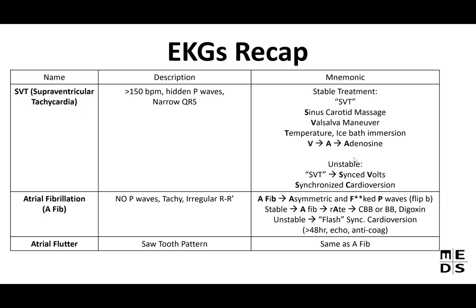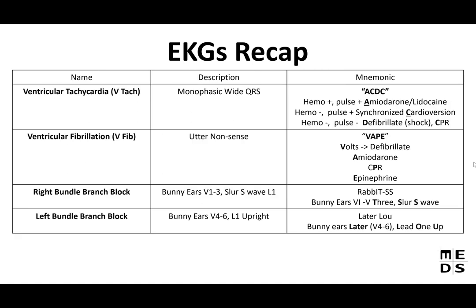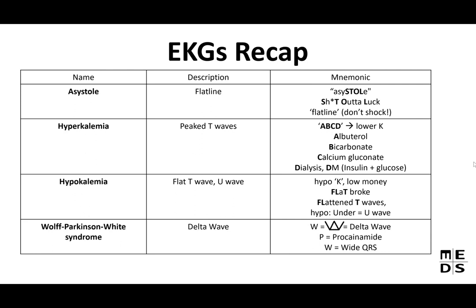I've put together a summary table across three slides covering SVT, AFib, AFlutter, VTach, VFib, right bundle branch block, left bundle branch block, asystole, hyperkalemia, hypokalemia, and WPW. Take a screenshot for studying or making flash cards.